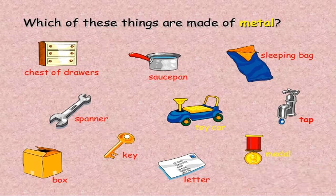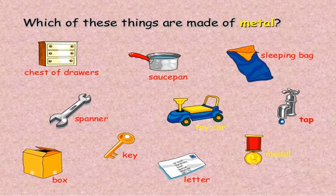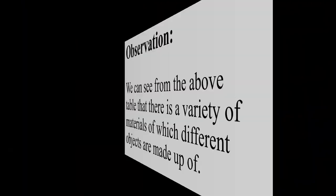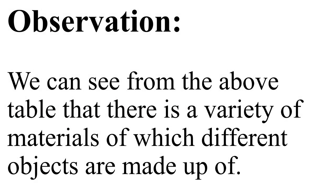Alright, one last question of this type: Which of these things are made of metal? Be careful while choosing your answers. The answers are: chest of drawers, saucepan, tap, a medal, toy car, spanner, and key. Yes, you all got it right. After performing this activity, we can see from the above table that there is a variety of materials of which different objects are made up of.